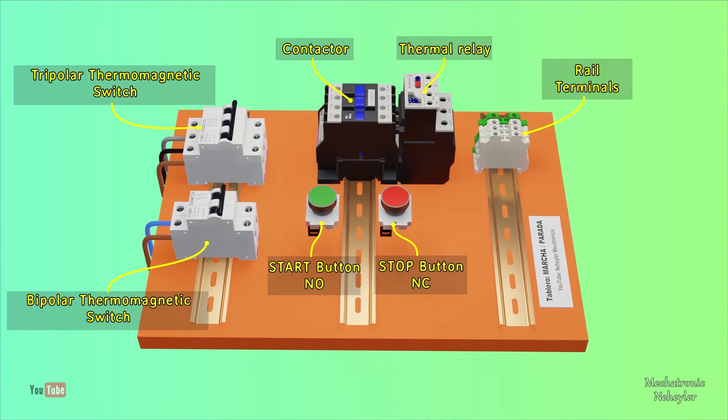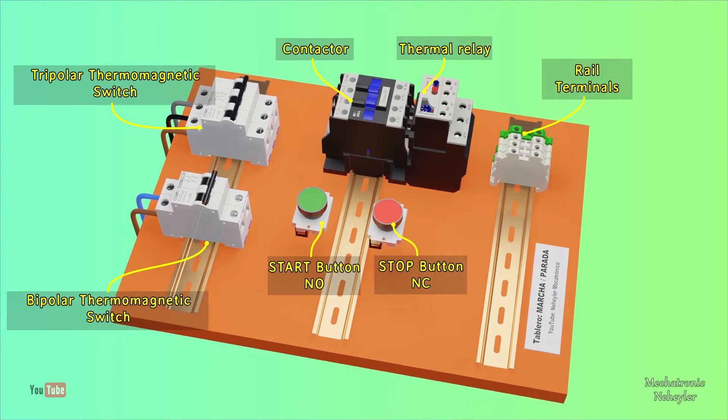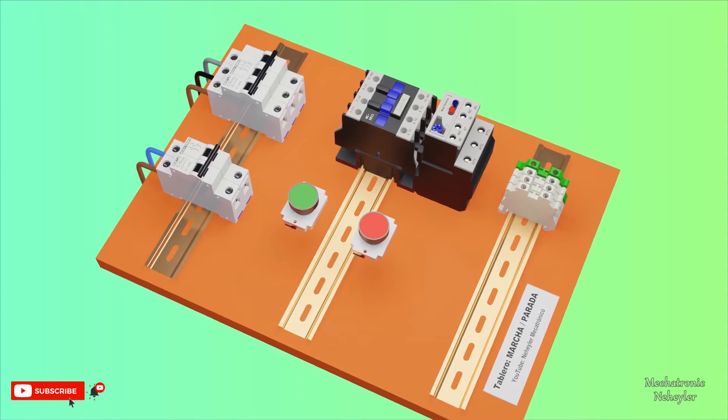Here are shown the basic elements necessary to make a direct start of a motor, that is, to start and stop. All these elements are mounted on a DIN rail board, except for the push buttons.